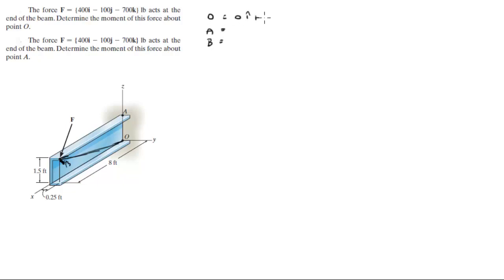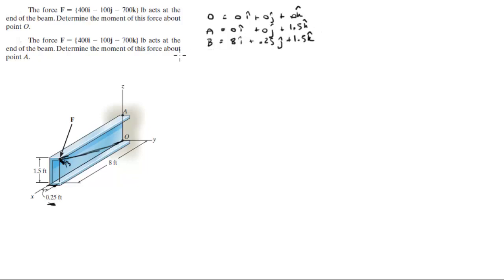O sits at the origin. A sits at 0i plus 0j plus 1.5k — just 1.5 above the origin. And B sits at 8i plus 0.25j — notice that there is a slight magnitude in the y-direction, don't miss it even though it's very small — plus 1.5k. The force F is equal to 400i minus 100j minus 700k, in pounds, and all distances are in feet.